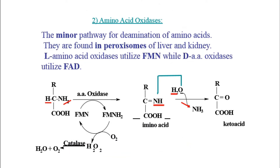The second mechanism is amino acid oxidase, which mainly takes place in peroxisomes — specifically peroxisomes of the liver and kidney. L-amino acids, the major type, get oxidized using flavin mononucleotide (FMN), which is reduced to FMNH2. D-amino acids get oxidized using flavin adenine dinucleotide (FAD). Ultimately, the amino groups are removed and the amino acids are converted into keto acids.